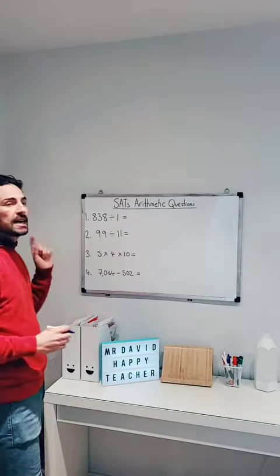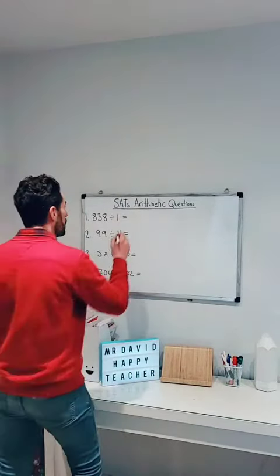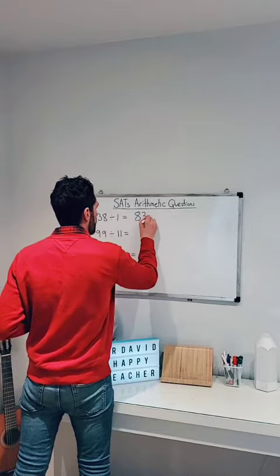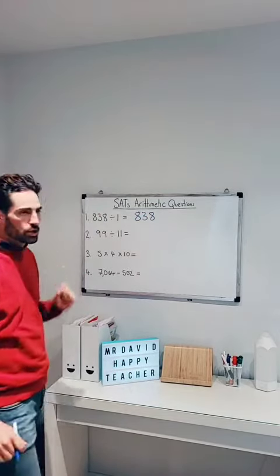So the first one we've got here is 838 divided by 1. Now, anything divided by 1, just automatically know, just stays the same. So it'll be 838. Let's go to the next question. Question number 2.